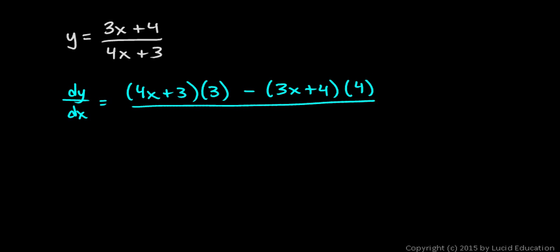So that's low d high minus high d low, and all of that is over the denominator squared, 4x plus 3 squared. Then all we need to do is simplify the numerator up there. Distribute this 3 and we get 12x plus 9.